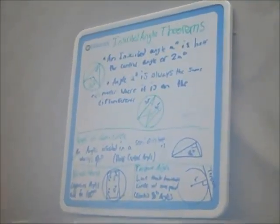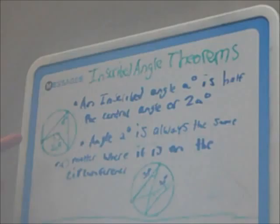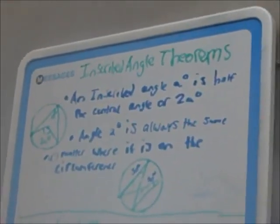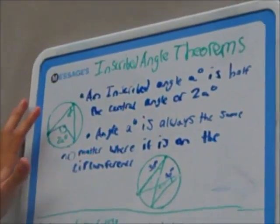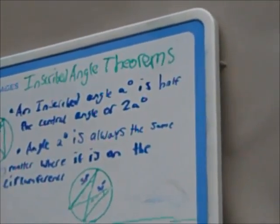And now for the inscribed angles theorems. Our first theorem is that an inscribed angle, a degrees, is half the central angle, or 2a degrees. As we see in the diagram here, we have a degrees, which is the inscribed angle, and 2a degrees, which is the central angle.